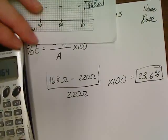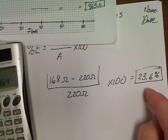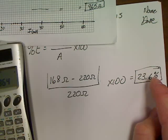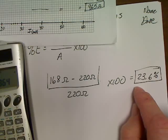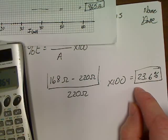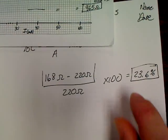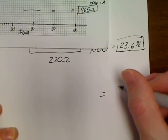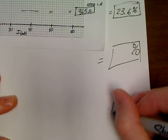23.6% is actually not a very good percent error. In this lab, you should have about 5 to 10%, and some of you will actually have about 1% error — some of you did really good jobs. So you should end up with three of these percent error calculations.